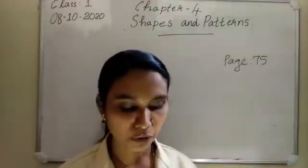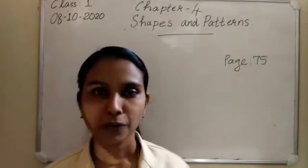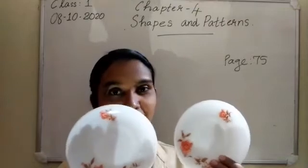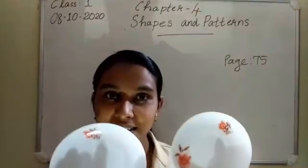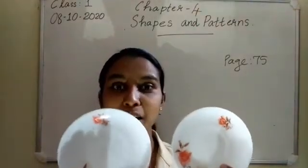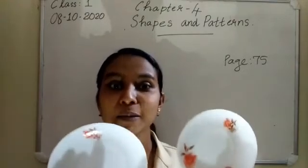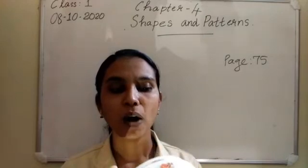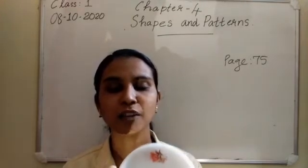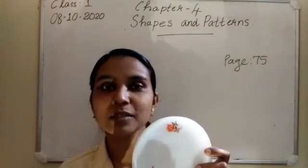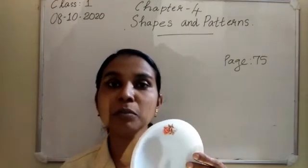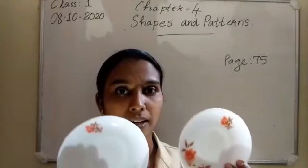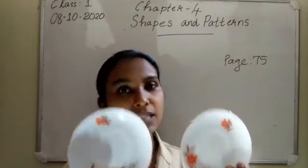Now I am going to show you same size. Look at these two circles - these two are the same size. If you keep one above another, you can feel like one. This means these two are the same size - the size of these two are equal.